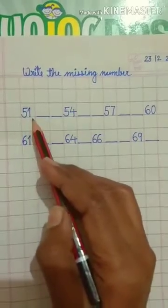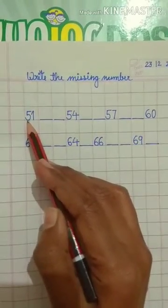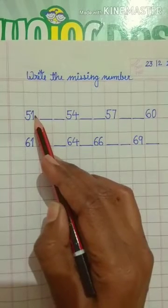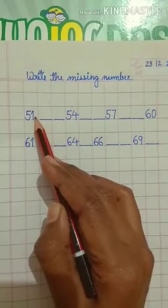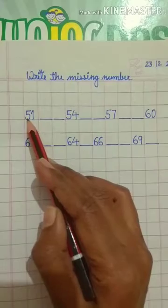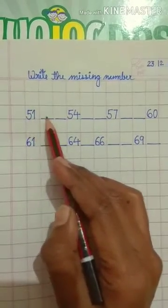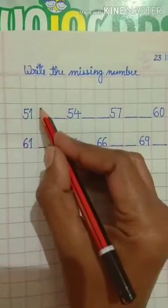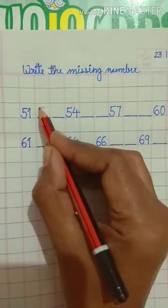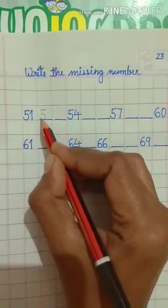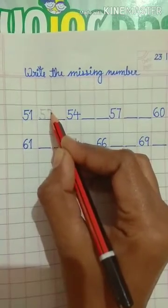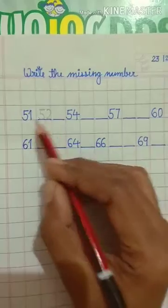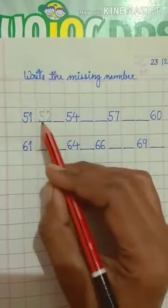Which number is this? This is number 51. Can you see which number is this? Can you tell me? This is number 51. Which number comes after 51? 52. 52 comes after 51.